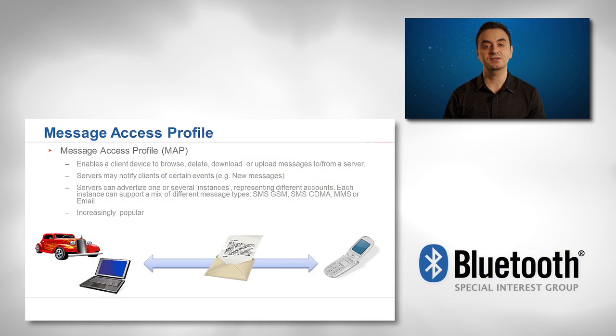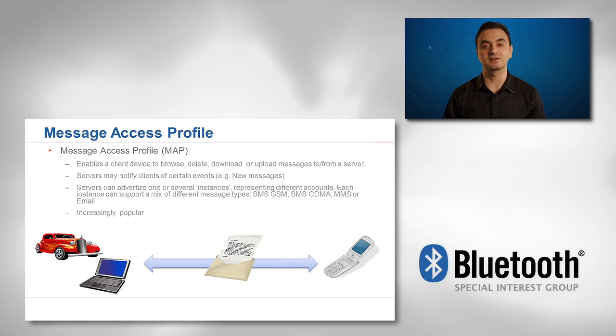Message Access Profile, known as MAP, is becoming increasingly popular and is largely inspired by feedback with several new additions. It shares messages instead of phonebook entries, supports notifications such as new message alerts, and enables clients to interact with the message database.